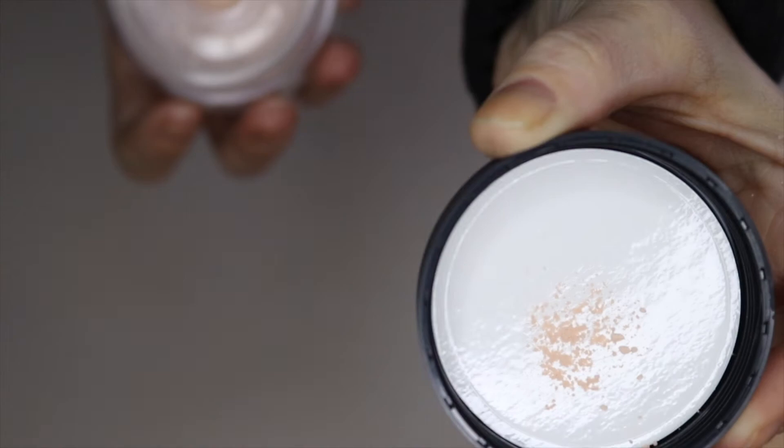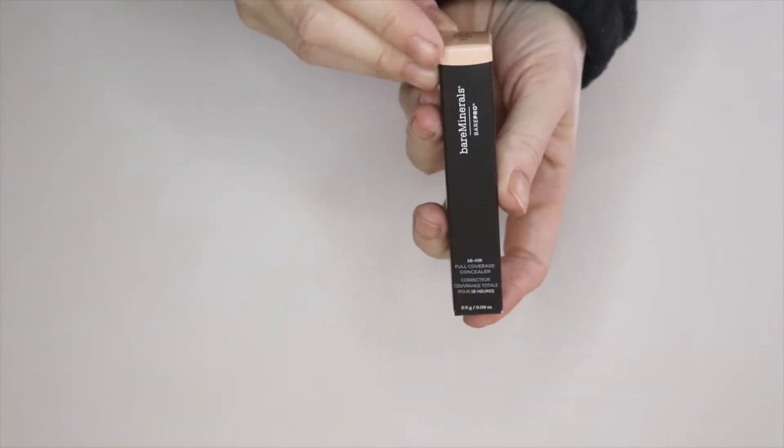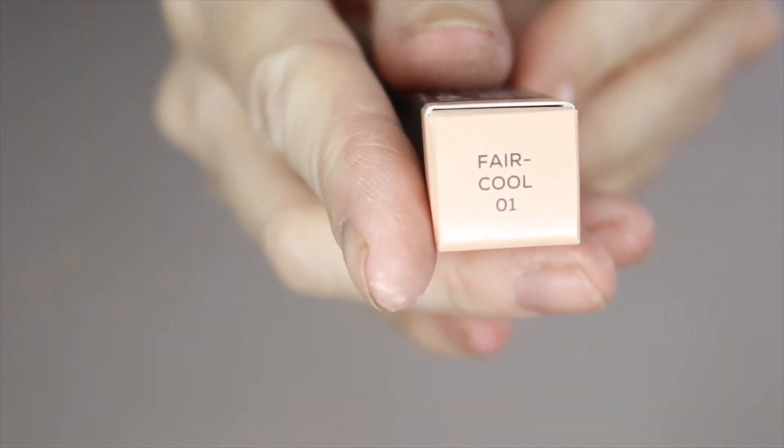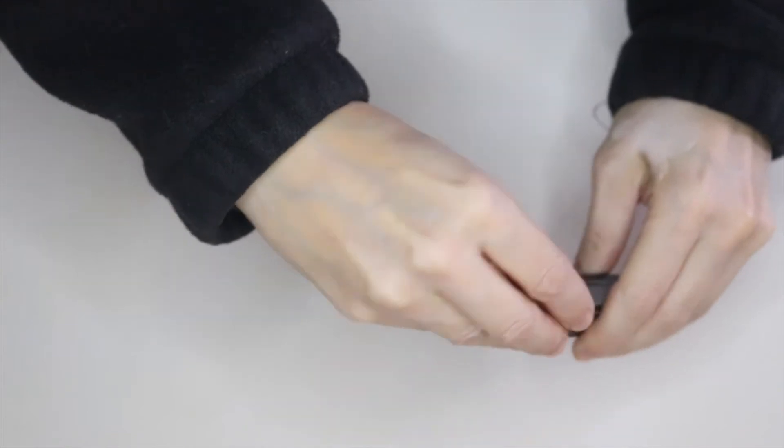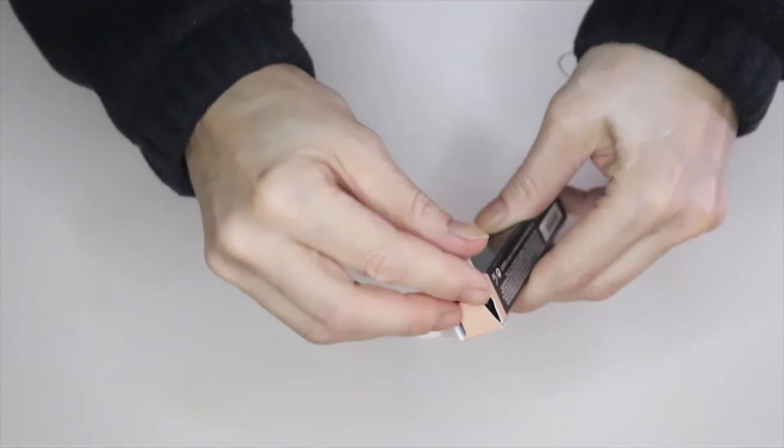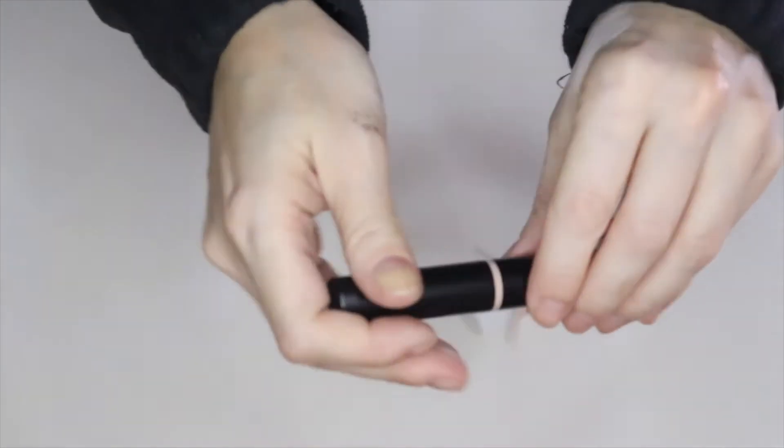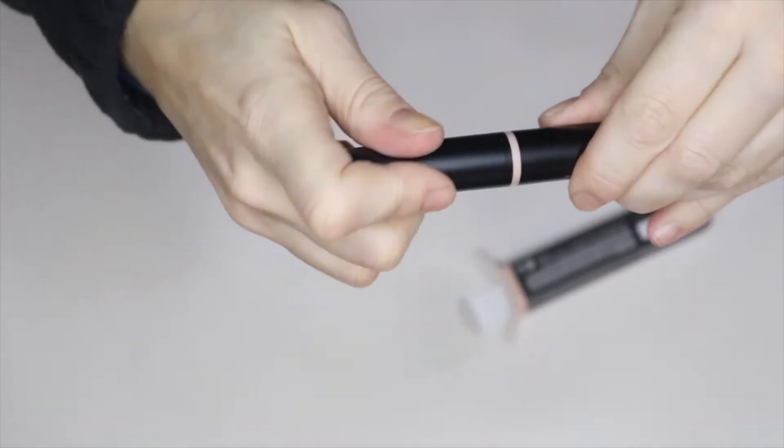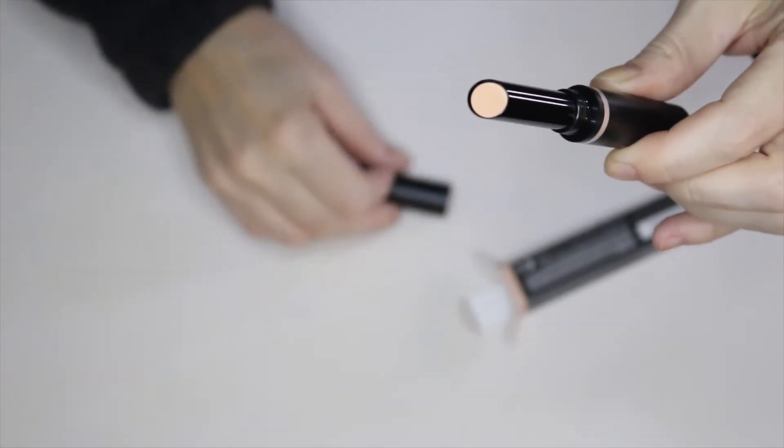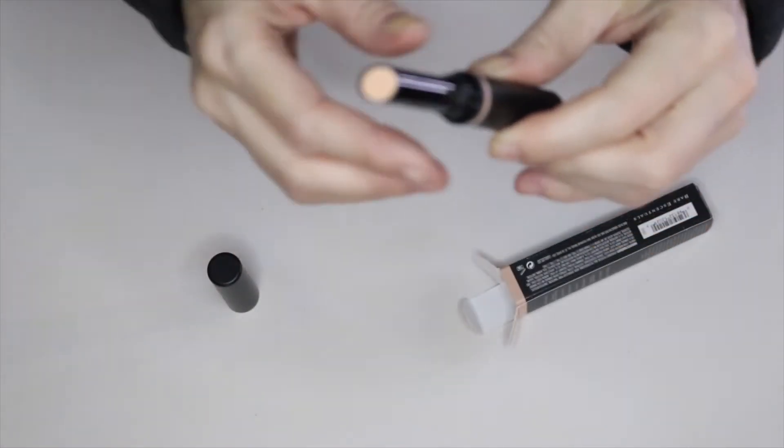Bare Minerals concealer not only has great coverage, it also helps hide any under-eye wrinkles that you might have. It's quite magic. It comes in this nice little stick, and no, you don't twist—you actually pull to get the top off. I really like the angle. It makes it really easy to apply directly to your skin.